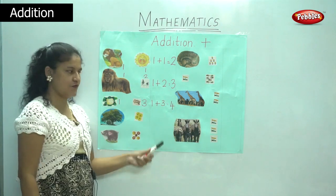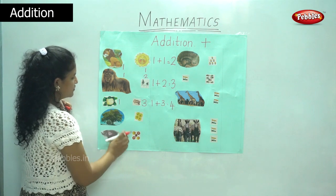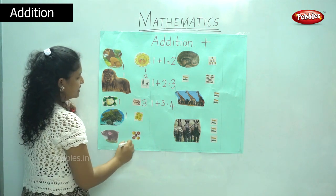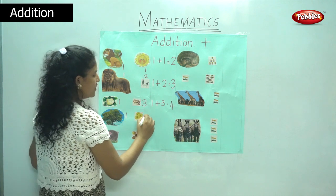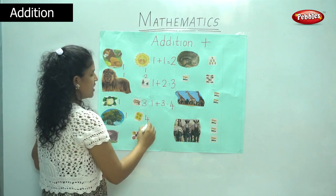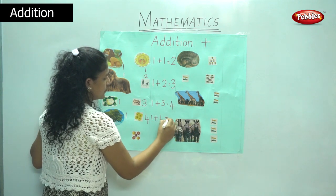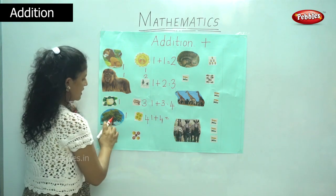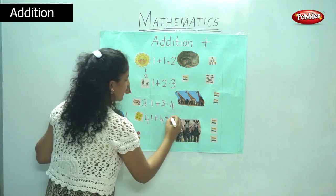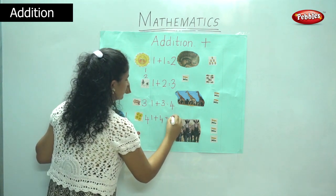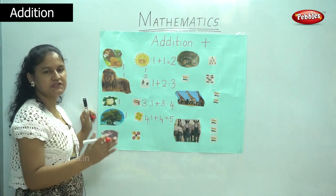One plus three is four. The next picture I have one tree and four flies. So we count one plus four is equal to one, two, three, four, five. We have five. One plus four is five.